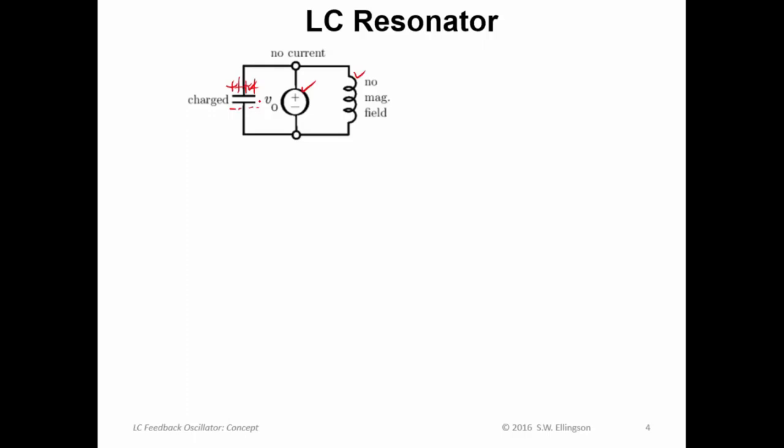In fact since no current is flowing we will also have no magnetic field in the inductor. So this is pretty boring. To make something happen here we simply disconnect this source which has been holding the LC circuit in its initial state. When we disconnect it what happens is now suddenly we have current flow. The current flow goes in this direction. We create a magnetic field now in the inductor because as you know current creates a magnetic field.